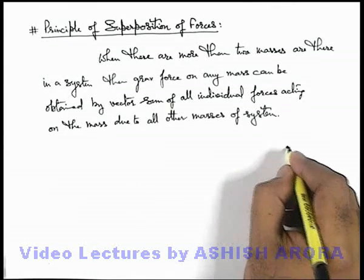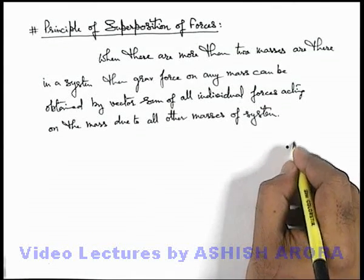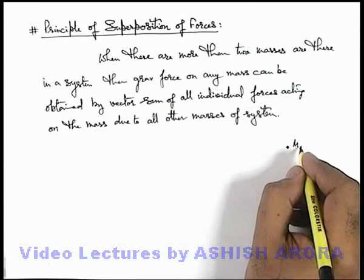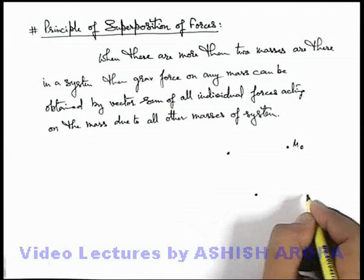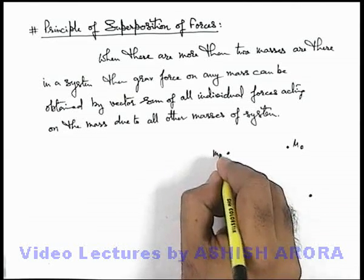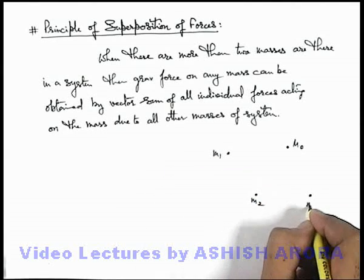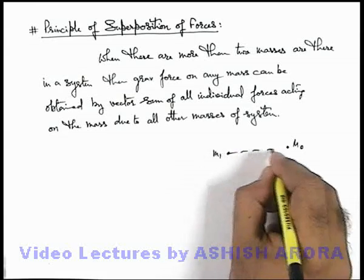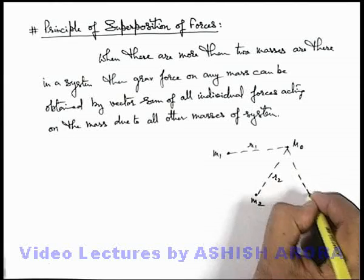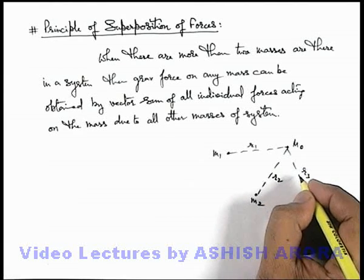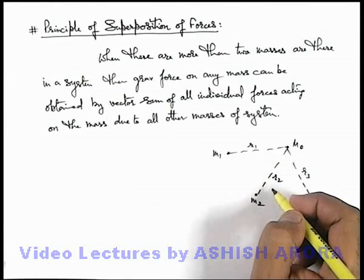Say we are having a mass m1, and we consider it m not. In its surrounding there are 3 masses present which are m1, m2, and m3, and these are located at distances r1, r2, and r3 from the point mass m not.